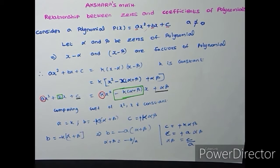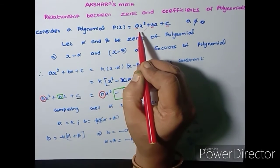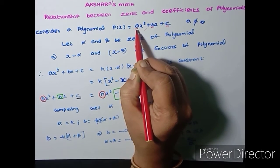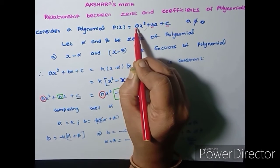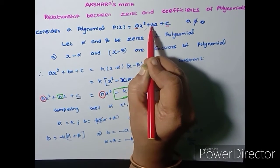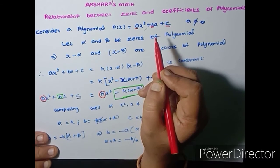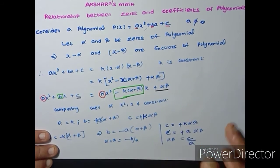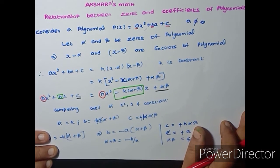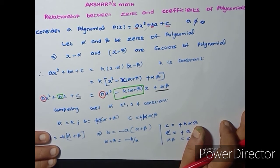What is the coefficient of the polynomial? I have marked here already. There is a polynomial Ax² + Bx + C. This A, B, and C are the coefficients of the polynomial. There is a relationship between these coefficients and the zeros of the polynomial, and in today's class we are going to find out exactly that.